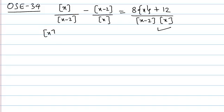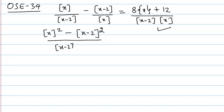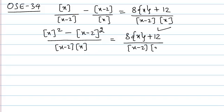So the most obvious step is to take LCM on this side: greatest integer of x whole square minus greatest integer of x minus 2 whole square, divided by greatest integer of x minus 2 into greatest integer of x, equals 8 into fractional part of x plus 12 divided by greatest integer of x minus 2 into greatest integer of x. Now this cancels out and we get a simplified form.